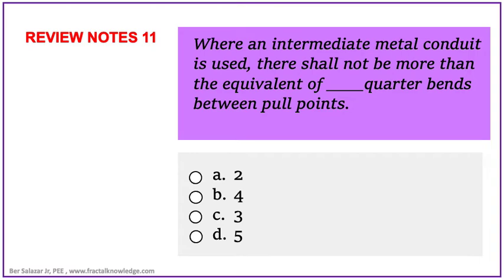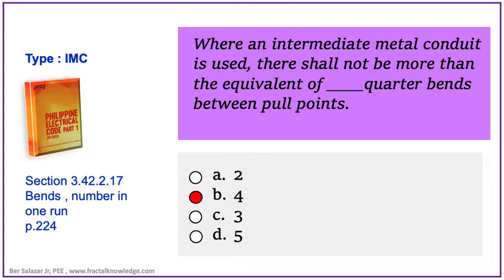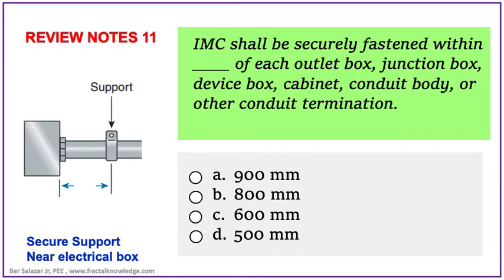Another problem regarding IMC asks: if an IMC is used, there shall not be more than the equivalent of blank quarter bends between pull points. How many maximum quarter bends between pull points is allowed — two, four, three, or five bends? The answer is letter B: four quarter bends between pull points. You can check it in section 3.42.2.17, page 224, for IMC bends number in one run.